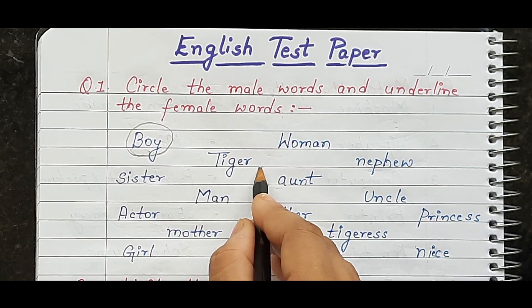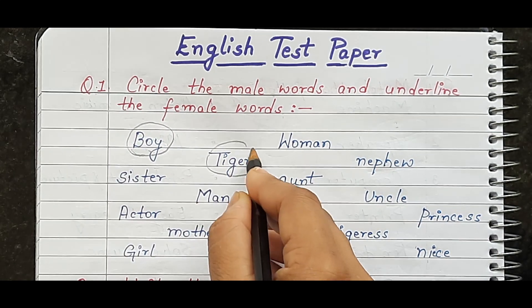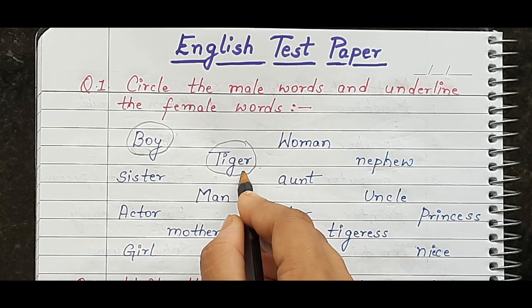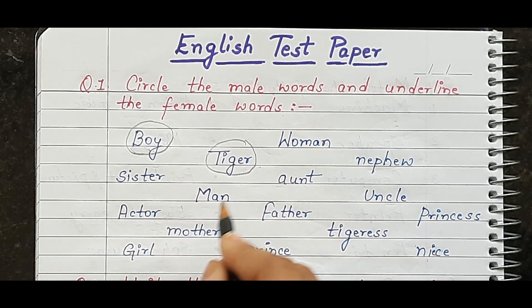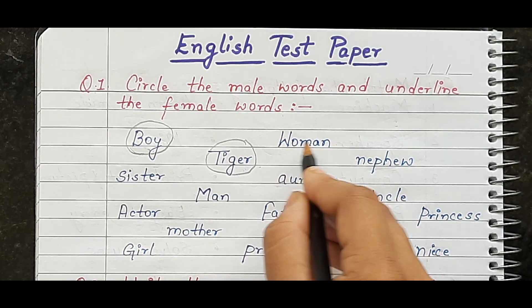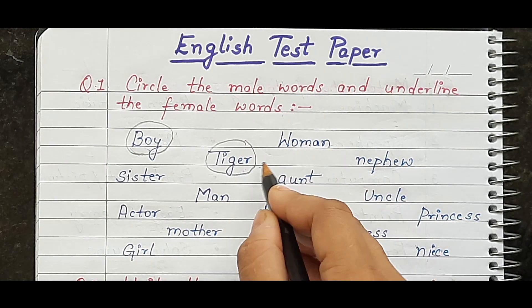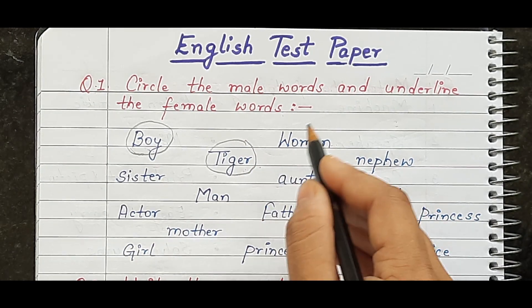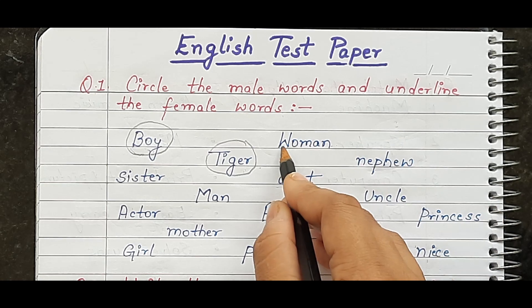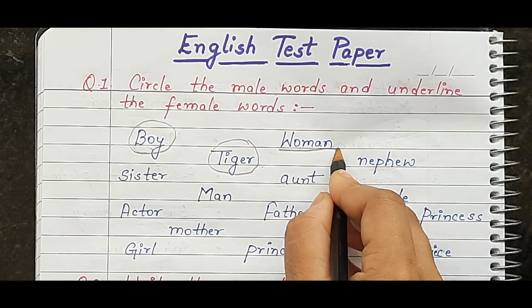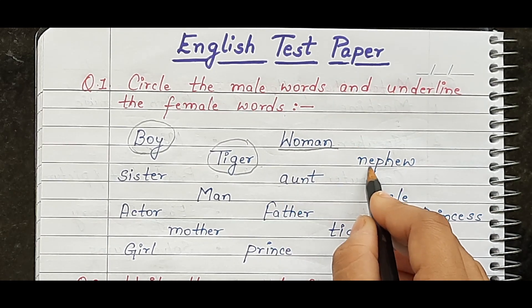Same way, 'tiger' — tiger is a male gender, so it is also circled. 'Women' — women is female. So what do we call the female word? We underline it.